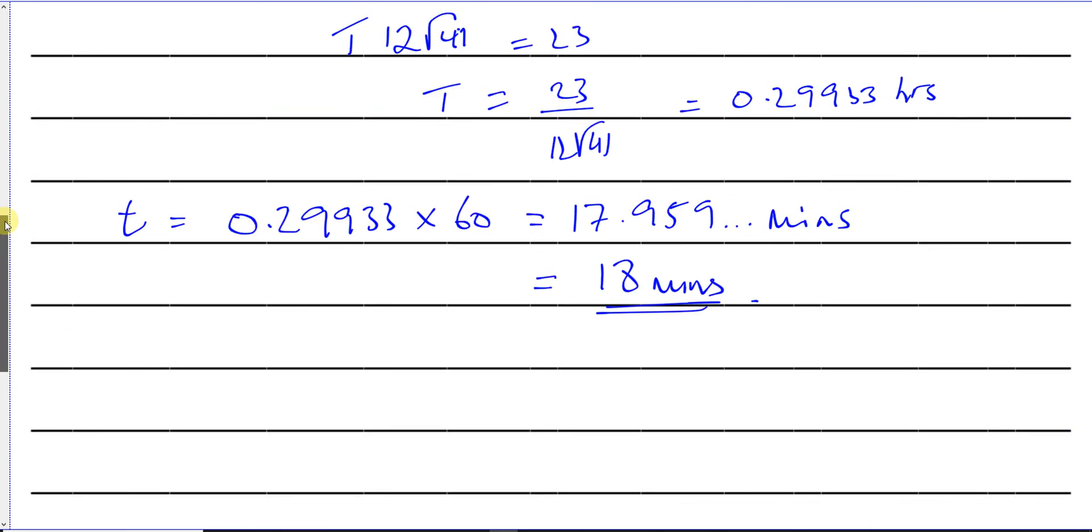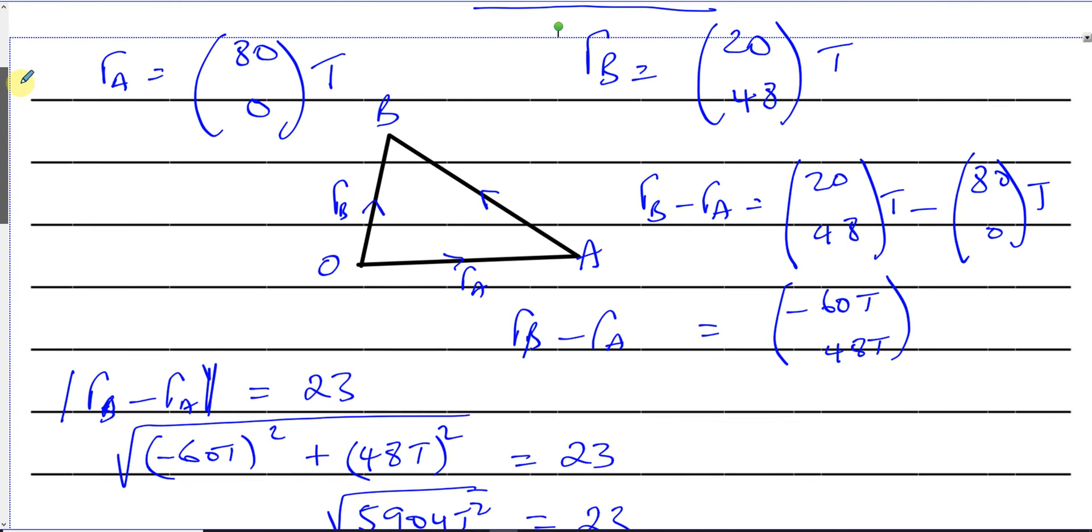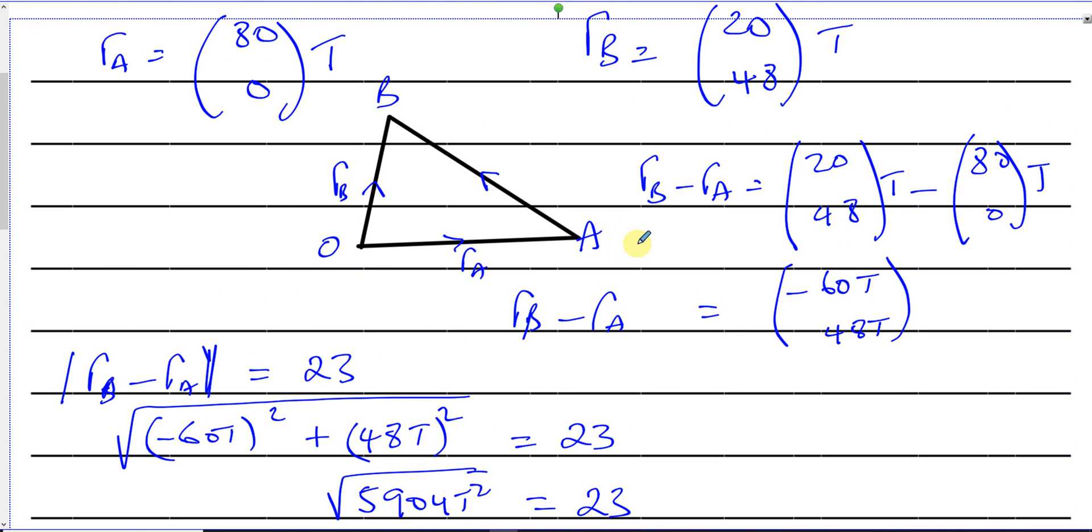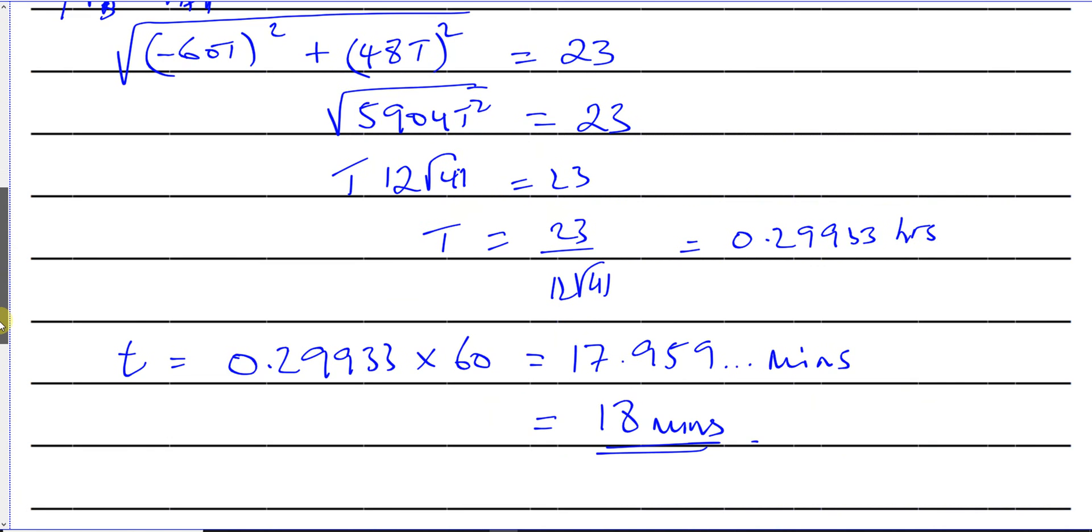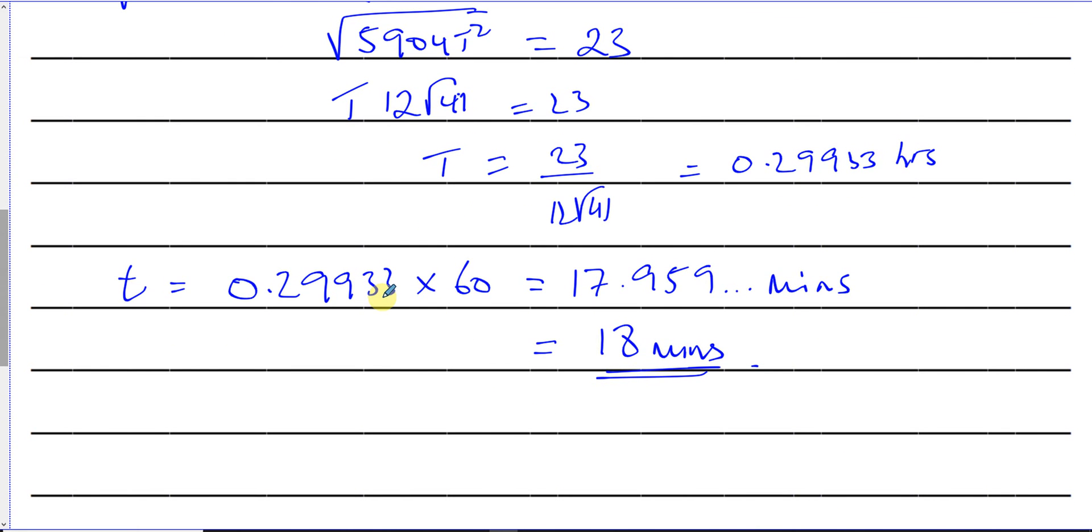So we need to define when the magnitude between A and B is 23 basically. So we found the vector that takes us from A to B in terms of T, and then we found we wrote an expression for its magnitude, and then we equated that to 23 and we found the time that took place and we converted that into minutes. So there we have the answer to the question.